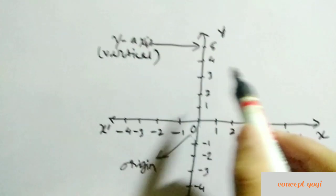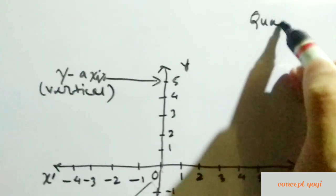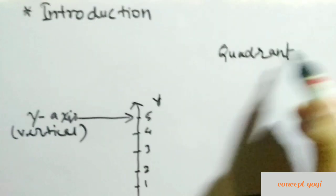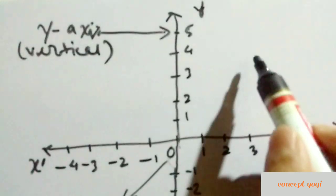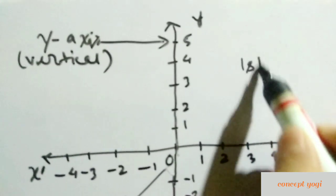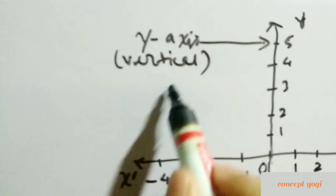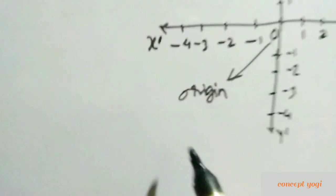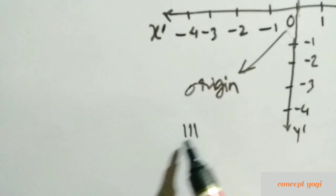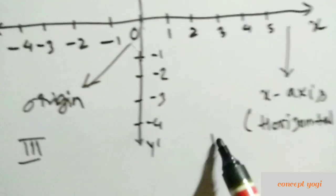These two lines meet at a point O, which is called the origin. The two lines divide the plane into four parts, each part called a quadrant. This is the first quadrant, this is the third quadrant, and this is the fourth quadrant.